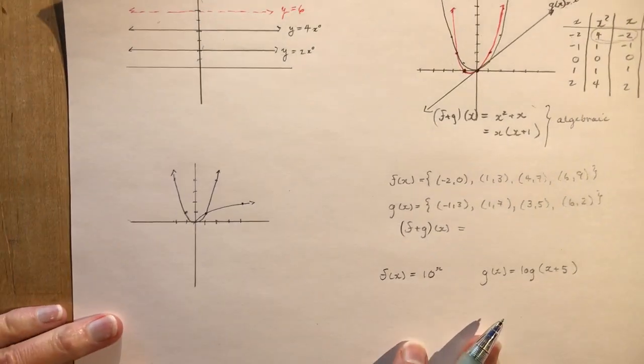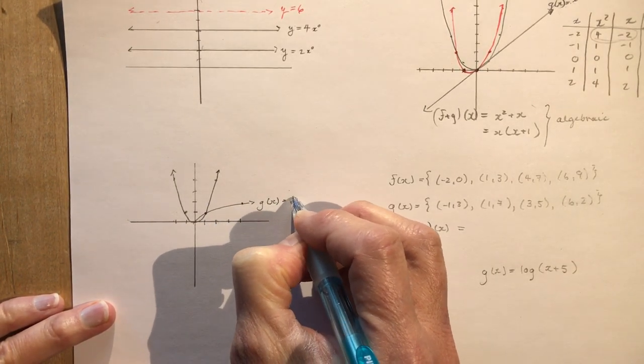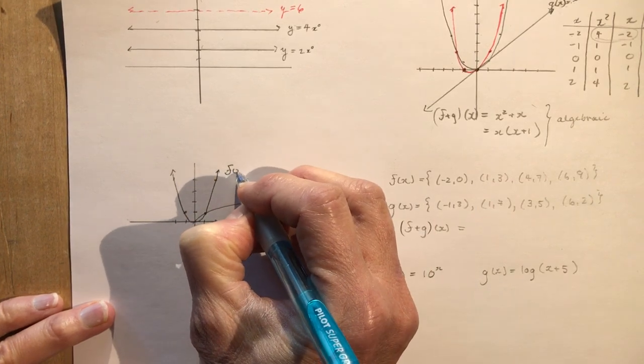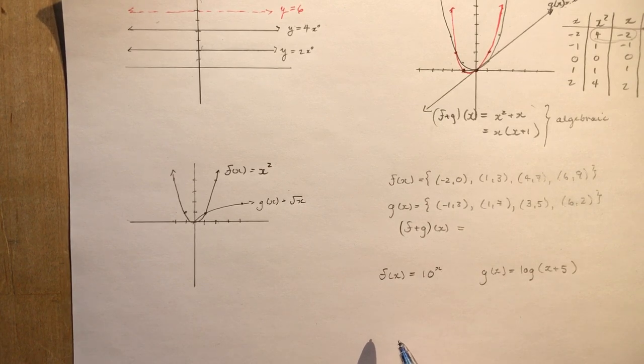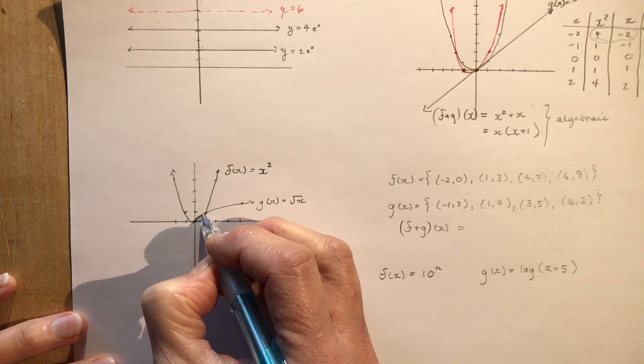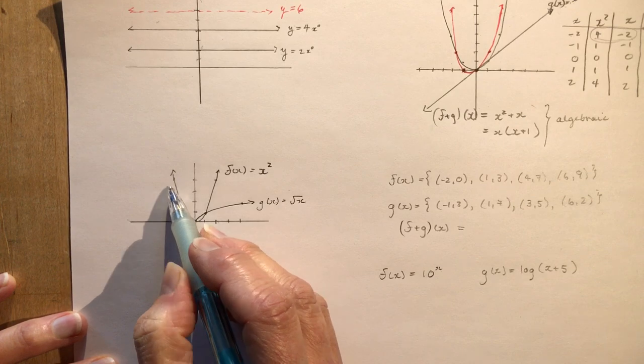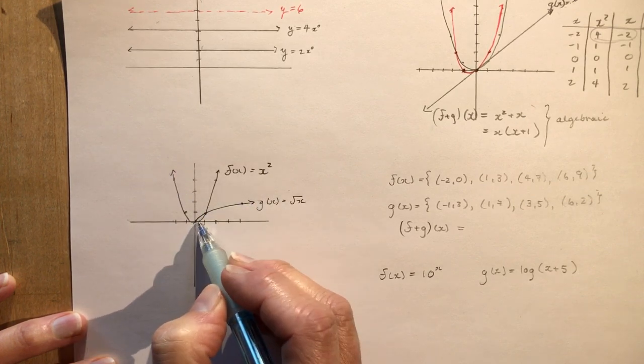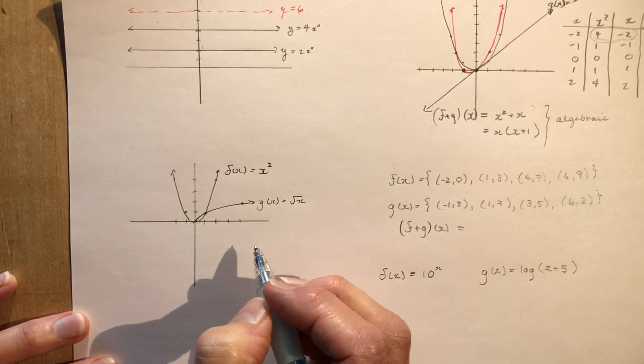Let's look at another one here. This is g at x, the root of x, and this is f at x equals x squared. I ask you to add these two functions together. The problem with adding functions is that in order for you to add them together, they have to have the same domain. How could I possibly add something here when I have nothing for this graph when x is less than zero? You have to look at the domains first.